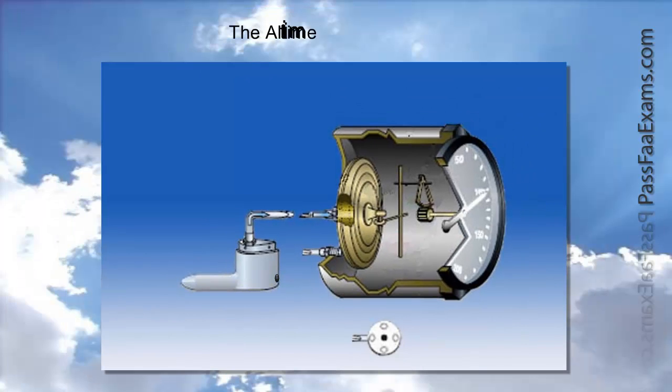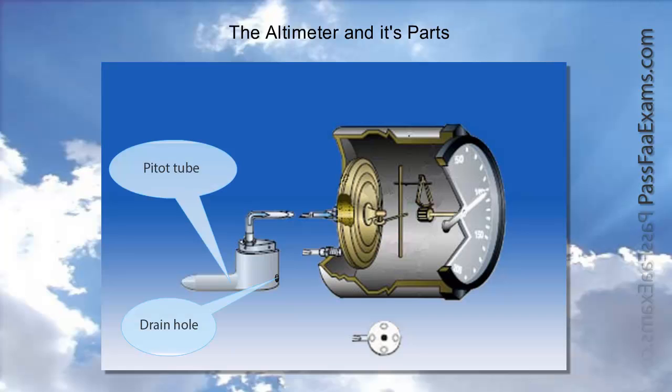So first of all, let's see how the airspeed indicator works from the inside out and name its parts. Starting from the outside, the airspeed indicator is connected to the pitot tube and drain hole which feed impact air to the diaphragm and to the static port which feeds the outside pressure to the chamber of the instrument. We will see later in detail why it is important to do this.